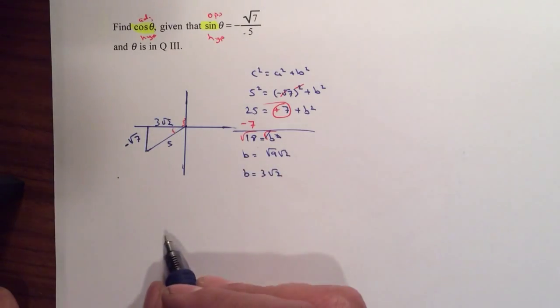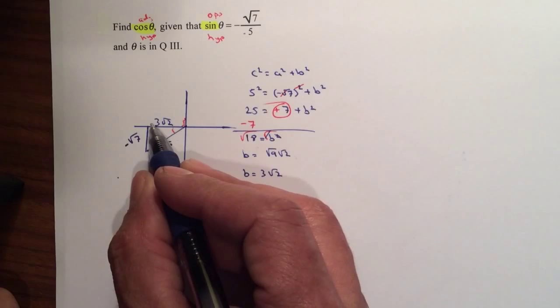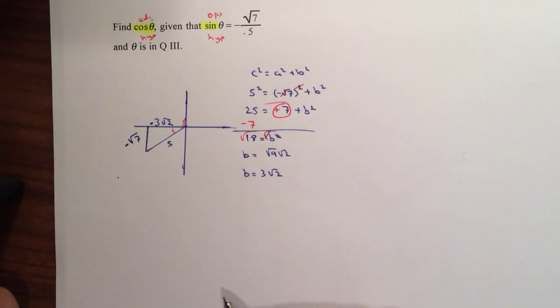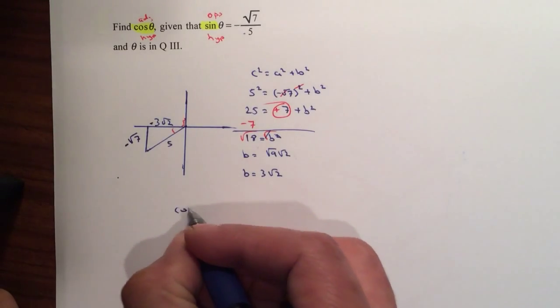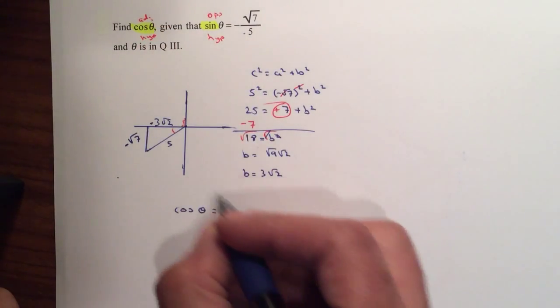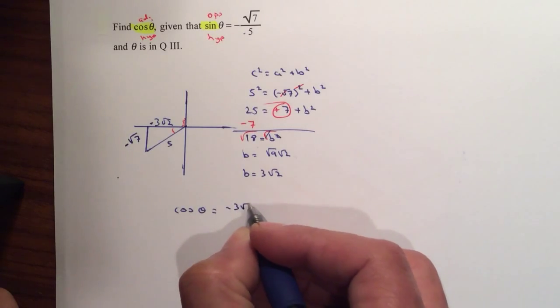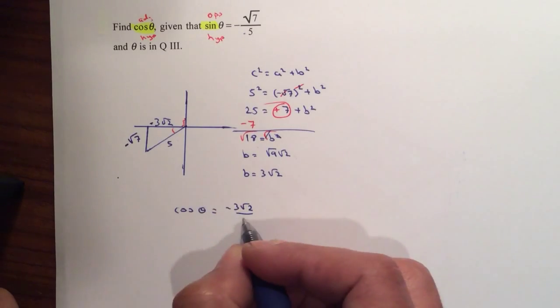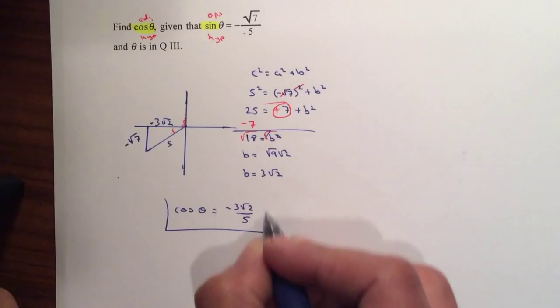Now one of the things that you have to be careful is because this is going to the left, this is going to be negative. So therefore the cosine of theta is your adjacent over hypotenuse. So the adjacent will be negative 3 square root of 2 divided by hypotenuse, which is 5. And that will be your answer.